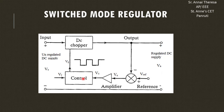By using this control technique, we can get the controlled gate pulse which is given to the DC chopper, and because of this control signal, we can get the regulated DC supply. The input unregulated DC supply is given to the DC chopper, and the output is taken out and given to the comparator.